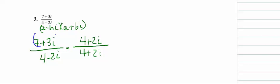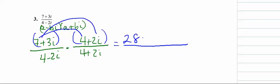Again, we have to FOIL out the top since this is two binomial groups, so we have 7 times 4 is 28, 7 times 2i is 14i, 3i times 4 is 12i, and 3i times 2i is 6i squared.